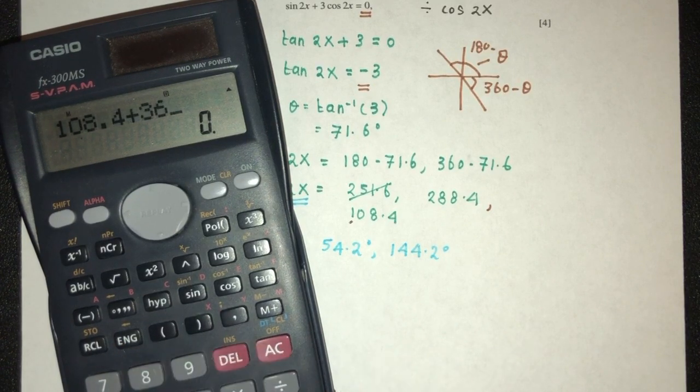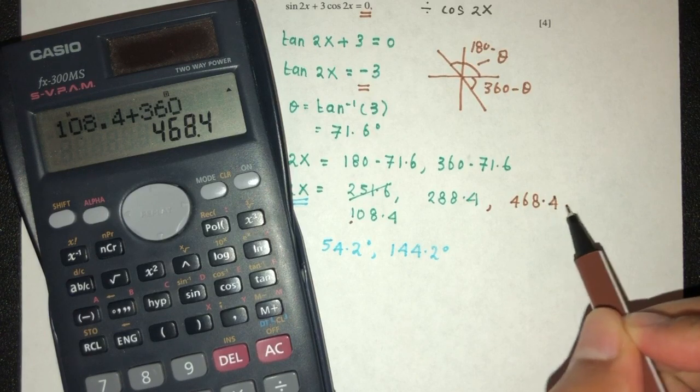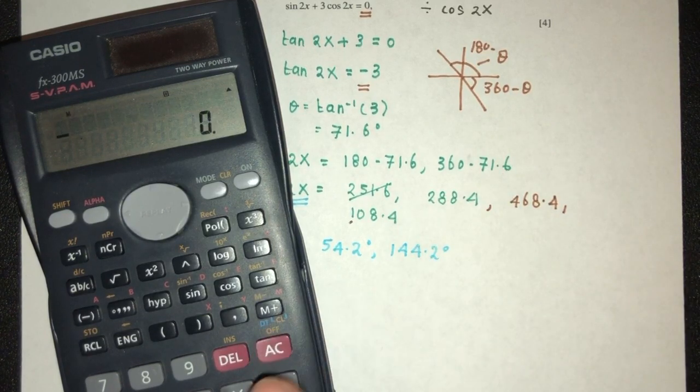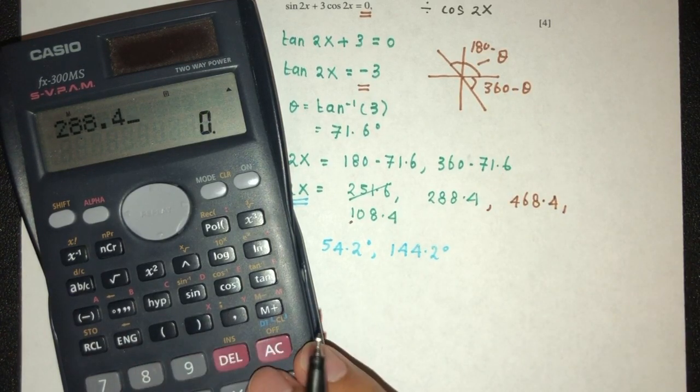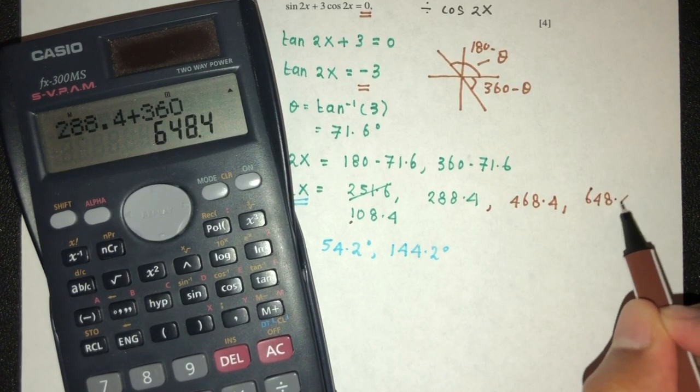108.4 plus 360, that will be 468.4. And this one will be obviously too much. Let's check. 288.4 plus 360, that should be 648.4.